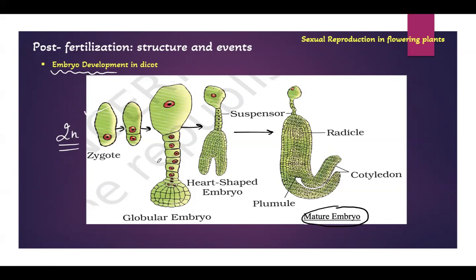There are different stages of embryo formation and depending on the structure of the embryo they have given different names. This embryo is called globular embryo because of its globular shape. This embryo is called heart-shaped embryo because it gives a heart shape when cotyledon formation has started, and later it gives rise to a complete embryo with two cotyledons. This embryo development is from a dicot seed. Similarly, monocot embryo development will also be almost similar but the structure will be a little different from the dicot embryo.